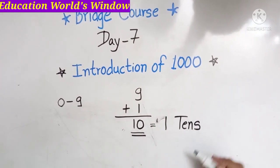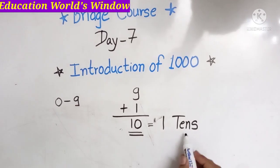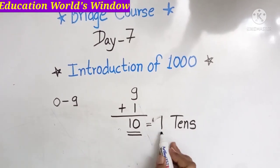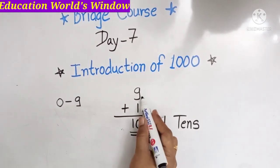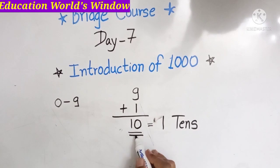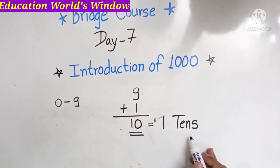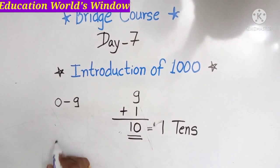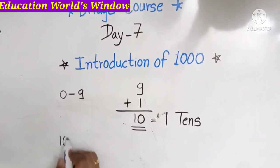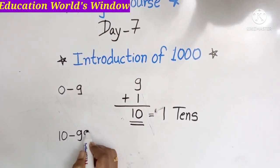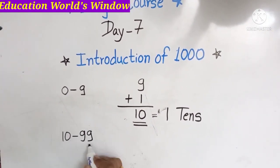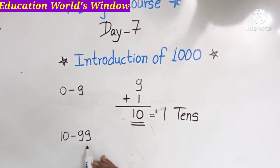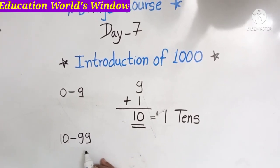10 is the smallest two-digit number, and 99 is the biggest two-digit number.